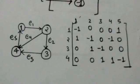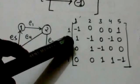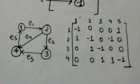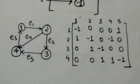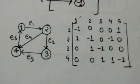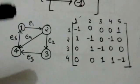There is an arc E4 from vertex 2 to vertex 4. Therefore in the incidence matrix, the entry at the second row and fourth column is minus 1, and the entry at the fourth row and fourth column is 1, and all other entries in the fourth column are 0.